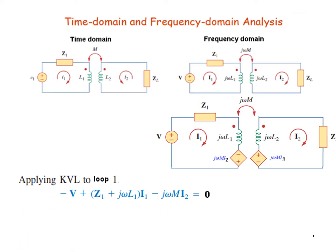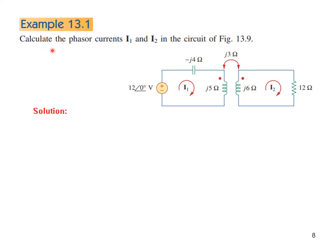Now we use KVL to write two equations. For the first loop: −V + Z1·I1 + jωL1·I1 + jωM·I2 = 0. For the second loop: jωM·I1 + jωL2·I2 + ZL·I2 = 0. This is the setup for example 13.1, which is already given in frequency domain and we need to find phasor currents I1 and I2.